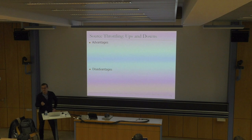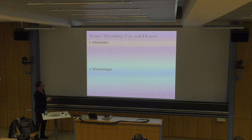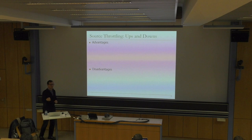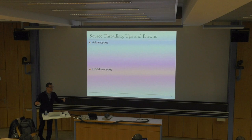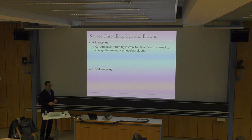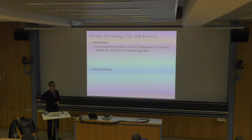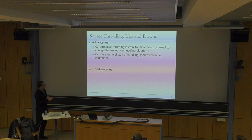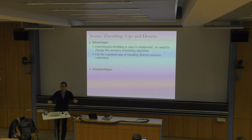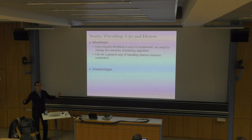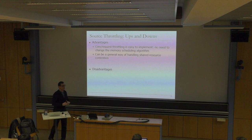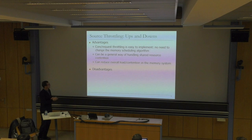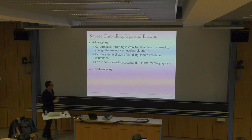So this is what we discussed last time: fairness via source throttling. Source throttling throttles the sources so that you inject less into shared resources, and you reduce interference that way. Conceptually, it's easy to implement because there's no need to change the memory scheduling algorithm or the resources that are shared. This can be a general way of handling shared resource contention because you're managing interference at the sources, not at the resources.